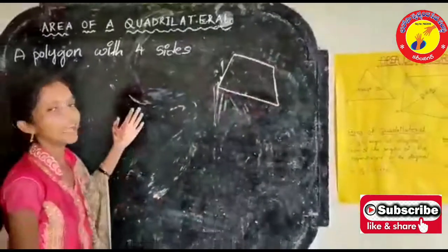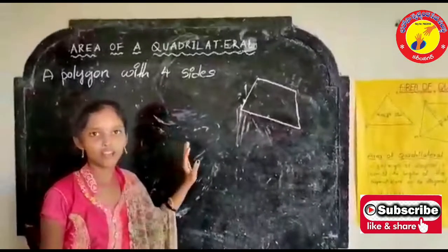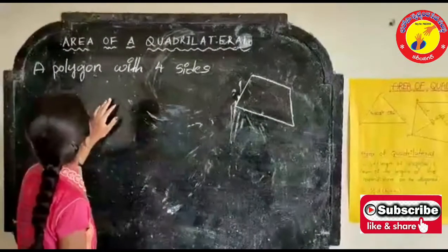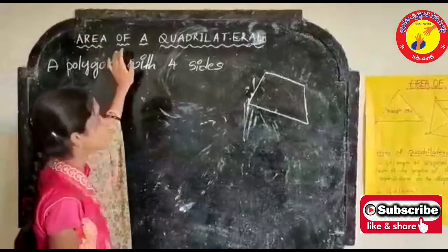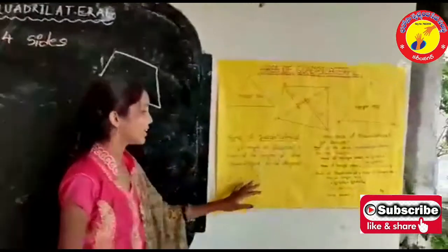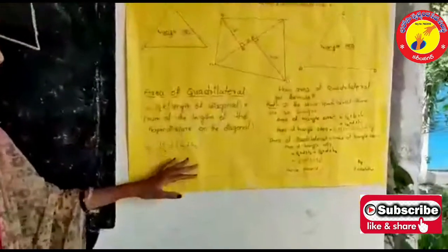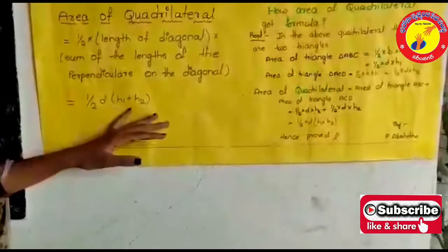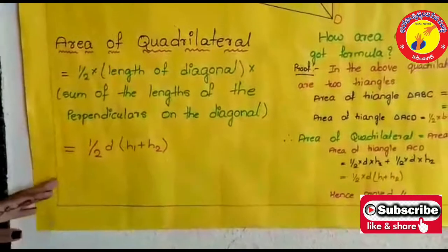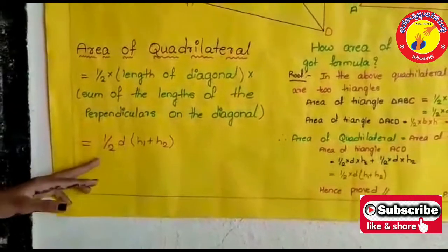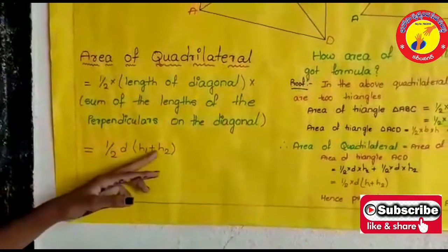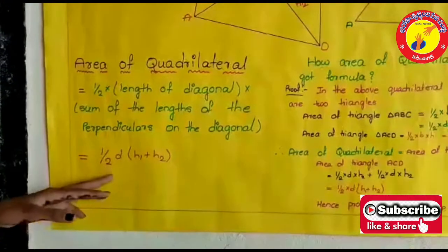Friends, we understood what is a quadrilateral. Next, I will go to discuss area of a quadrilateral. Area of quadrilateral equals to 1/2 × D × (H1 + H2). Here, D means diagonal and H1 plus H2 means height.